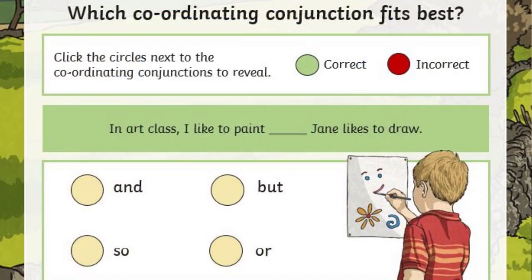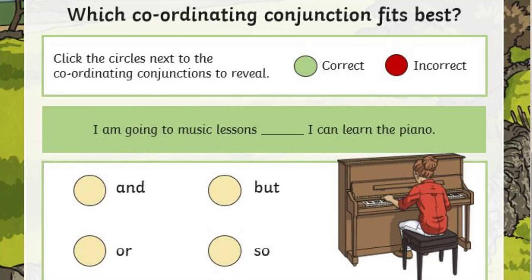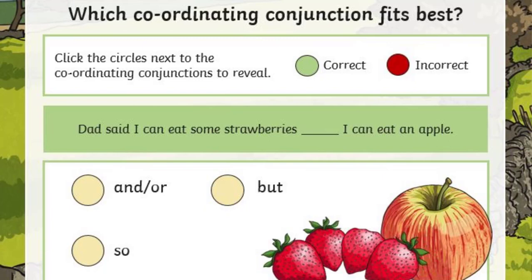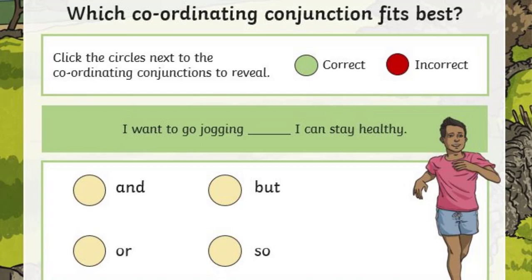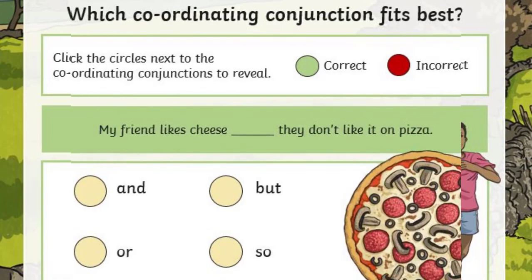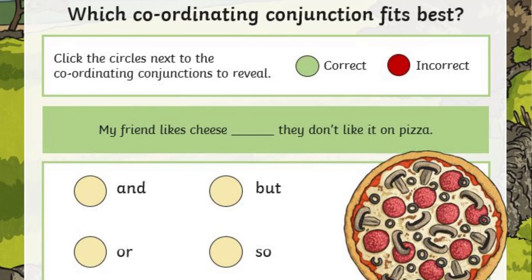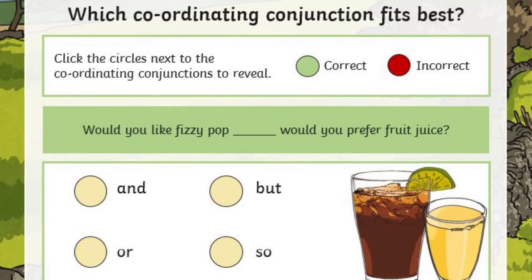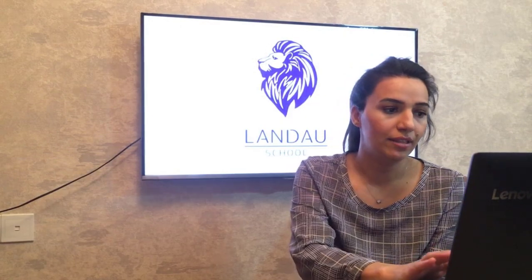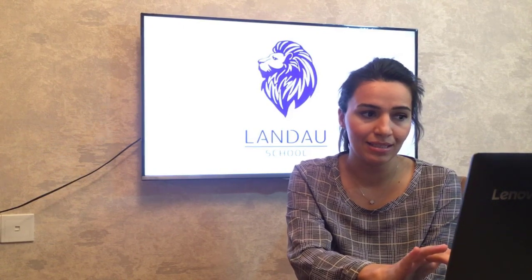In art class, I like to paint, Jane likes to draw. I'm going to music lessons so I can learn the piano. I can eat some strawberries or I can eat an apple. Do you want to go now or should we go later? I want to go jogging so I can stay healthy. My friend likes cheese but they do not like it on pizza. Would you like fizzy pop or would you prefer fruit juice?